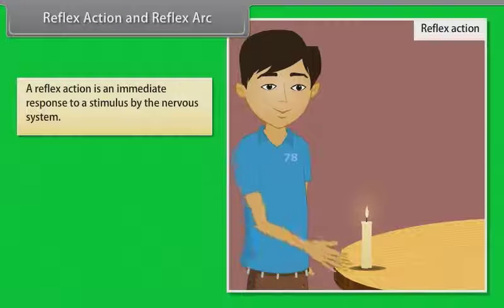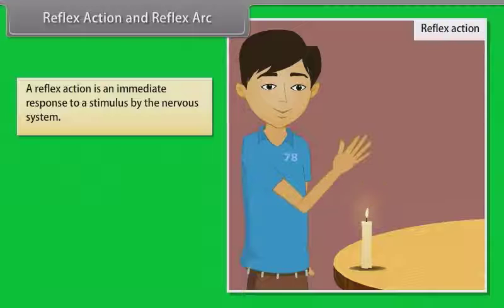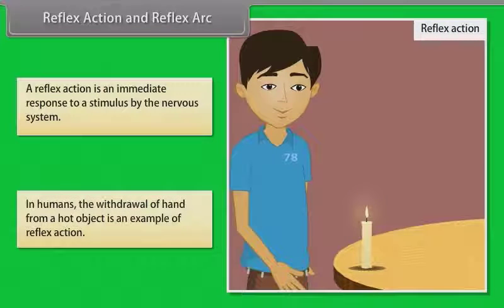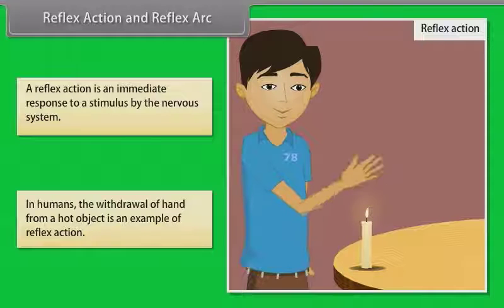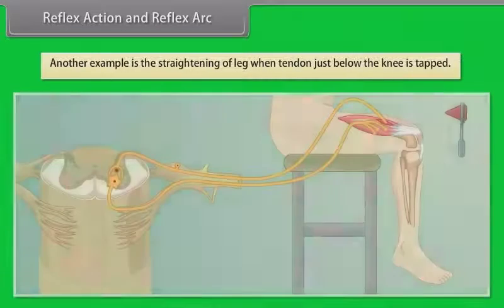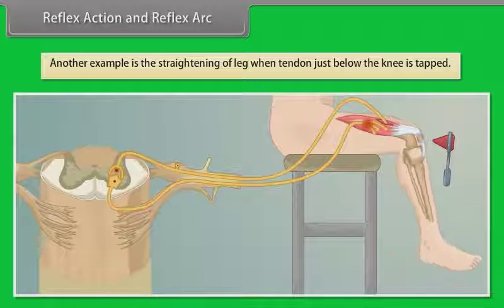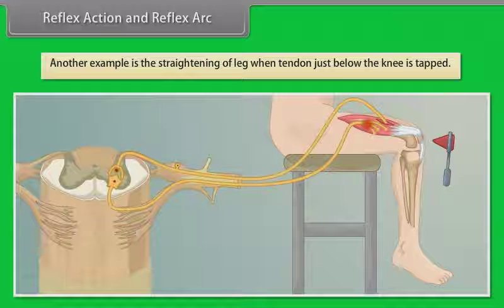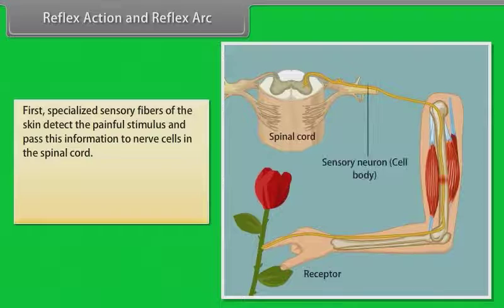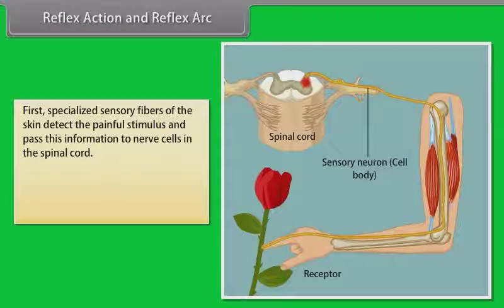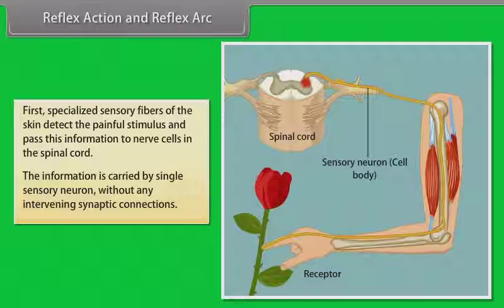A reflex action is an immediate response to a stimulus by the nervous system. In humans, the withdrawal of the hand from a hot object is an example of reflex action. Another example is the straightening of the leg when the tendon just below the knee is tapped. Specialized sensory fibers of the skin detect the painful stimulus and pass this information to nerve cells in the spinal cord, carried by a single sensory neuron without any intervening synaptic connections.